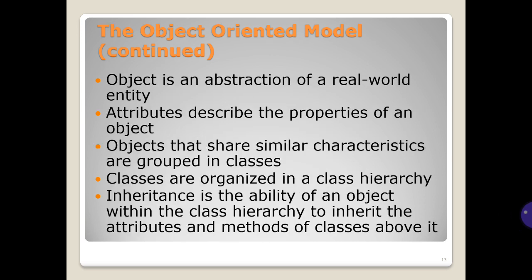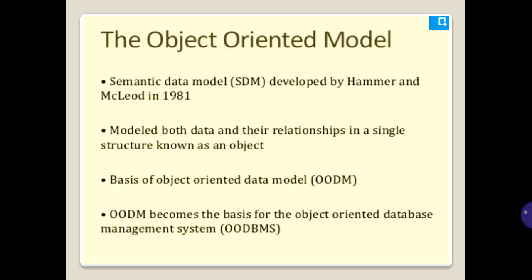The object is an abstraction of a real-world entity. Attributes describe the properties of an object. Objects that share similar characteristics are grouped in classes. Classes are organized in a class hierarchy. Inheritance is the ability of an object within the class hierarchy to inherit the attributes and methods of classes above it.